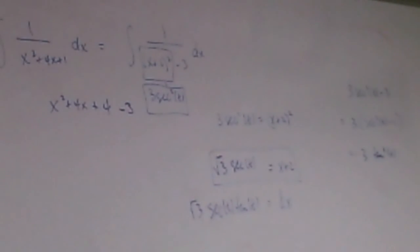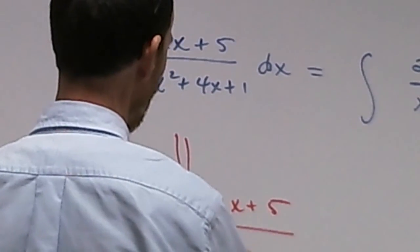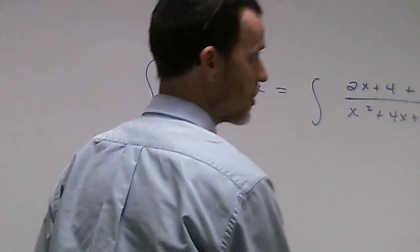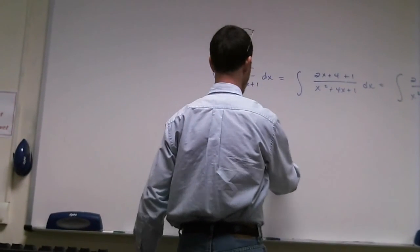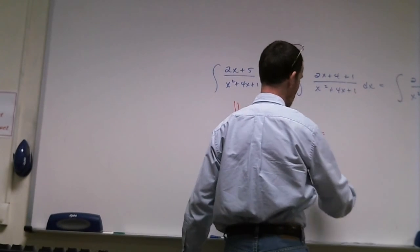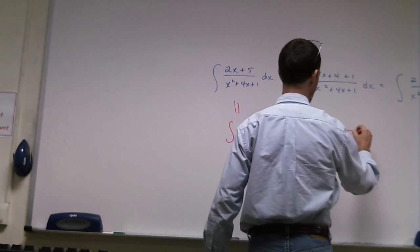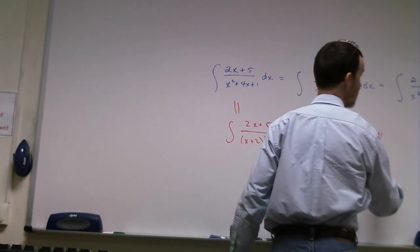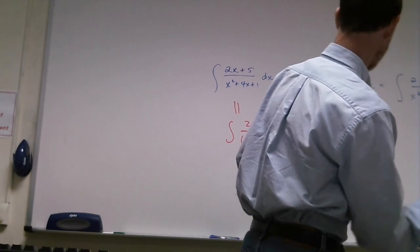You see what I mean? Another choice would have been to go from here and just go, okay, that's equal to 2x plus 5 over x plus 2 squared minus 3. And make the same substitution. x equals, x plus 2 equals root 3 secant of t. Okay.